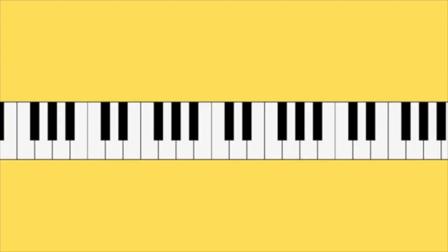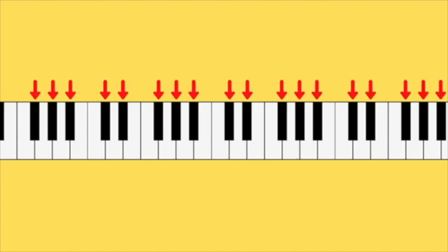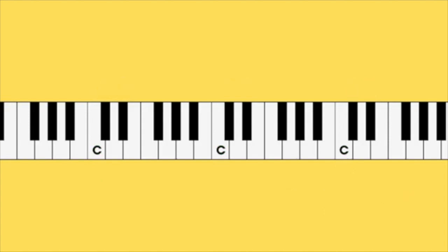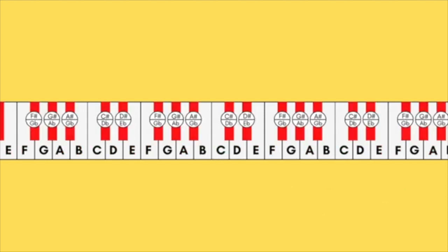Notice the black keys are in groups of 2, 3, 2, 3, and so on. If C is to the left of the two black keys, then C is here, and also here, here, and here. Then we can go in alphabetical order and just figure out all the white keys, and then we can figure out the black keys too.